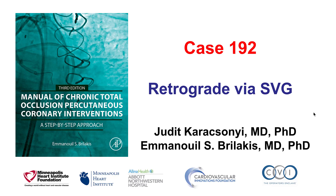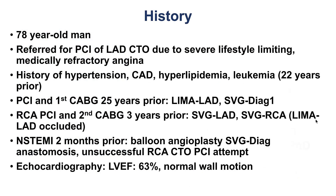This is a case of retrograde CTO crossing through a saphenous vein graft. The patient was an elderly gentleman who had a complex cardiac history. He had coronary bypass graft surgery twice, the most recent surgery being three years prior, and he presented two months prior with non-ST elevation myocardial infarction.